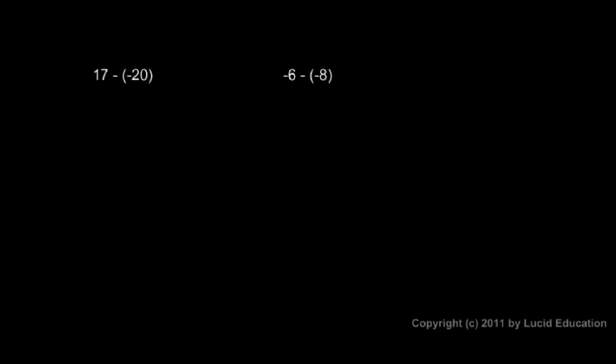And two more. 17 minus negative 20 can be written as 17 plus the opposite of negative 20, which is positive 20. And 17 plus 20 is 37.